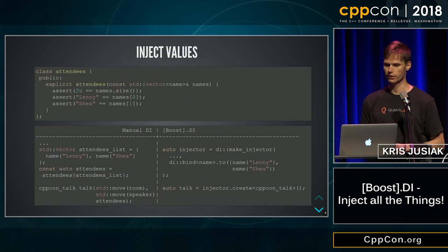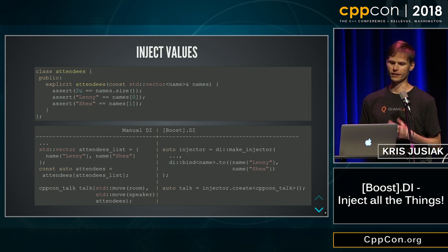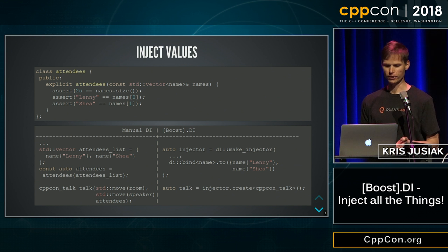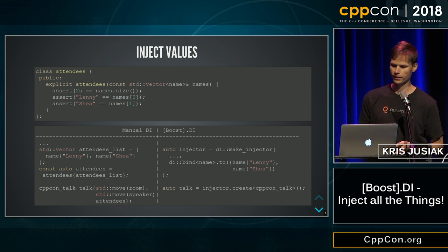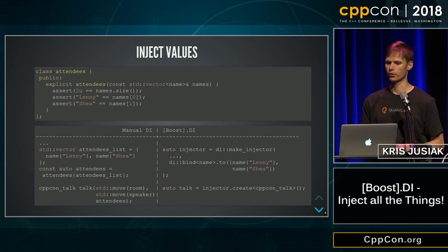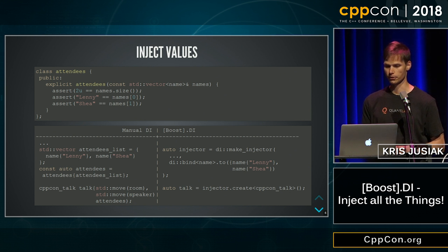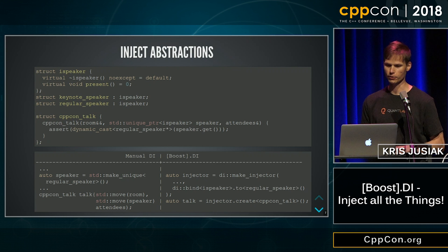We can also inject values. If you have a vector of names — for example, two attendees, Len and Shea — we can inject them. With manual DI we have to change everything again, but with DI we just bind the name to Len and Shea. After that, we just create the CVPCON talk and that will do it for us.